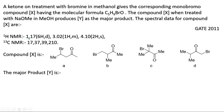We are left with option D as the correct answer. Checking: δ 1.17, 6H doublet — confirmed from the two equivalent methyl groups. 1H multiplet — the CH proton present. δ 4.10, 2H singlet — this CH2 is attached to bromine and adjacent to carbonyl, so it resonates at 4.10. In the ¹³C NMR: δ 210 for the carbonyl carbon, δ 39 for the carbon attached to the electronegative atom, δ 37 for the adjacent carbon, and δ 17 for the two equivalent methyl carbons. So option D is the correct answer.